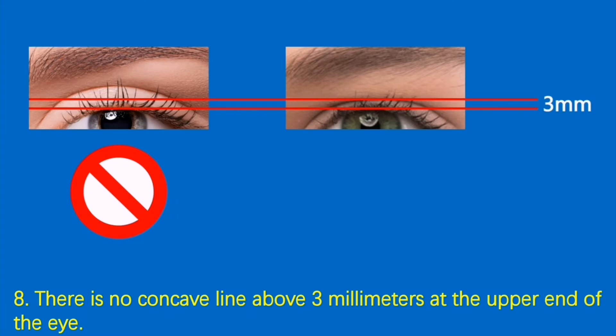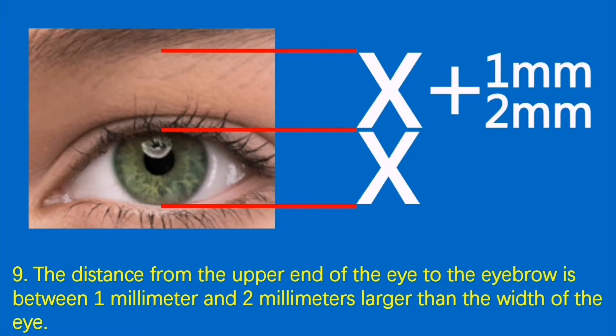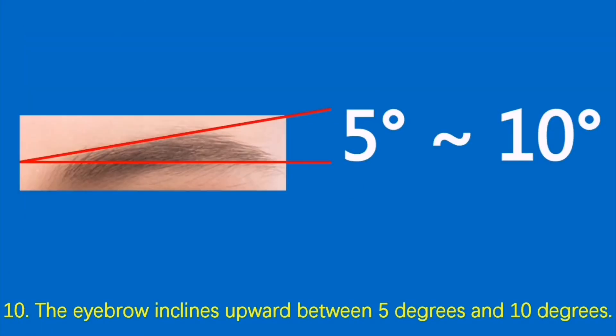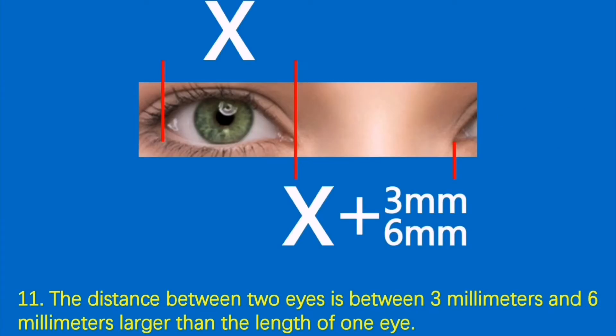8. There is no concave line above 3 millimeters at the upper end of the eye. 9. The distance from the upper end of the eye to the eyebrow is between 1 millimeter and 2 millimeters larger than the width of the eye. 10. The eyebrow inclines upward between 5 degrees and 10 degrees. 11. The distance between two eyes is between 3 millimeters and 6 millimeters larger than the length of one eye.